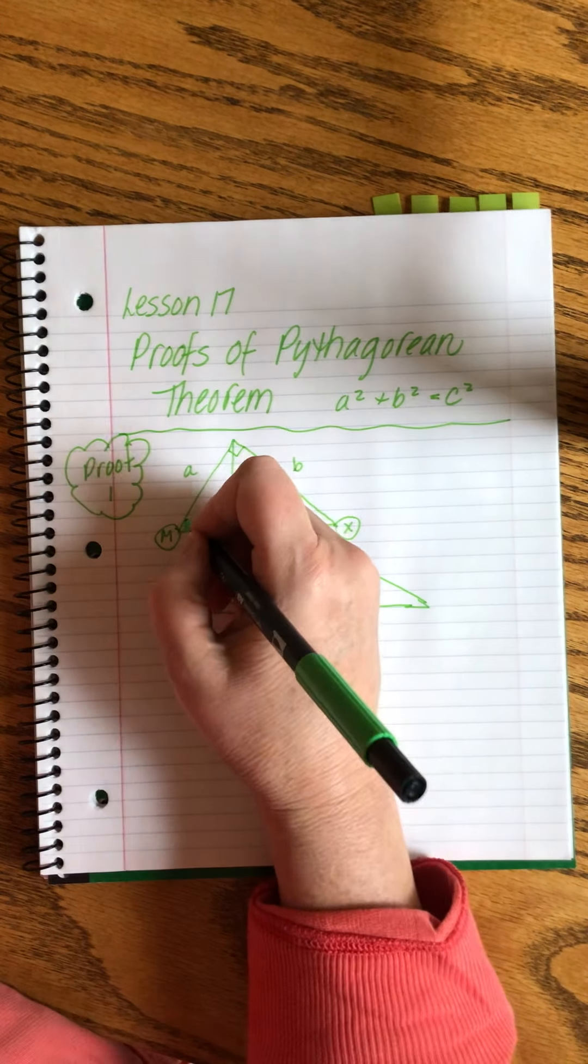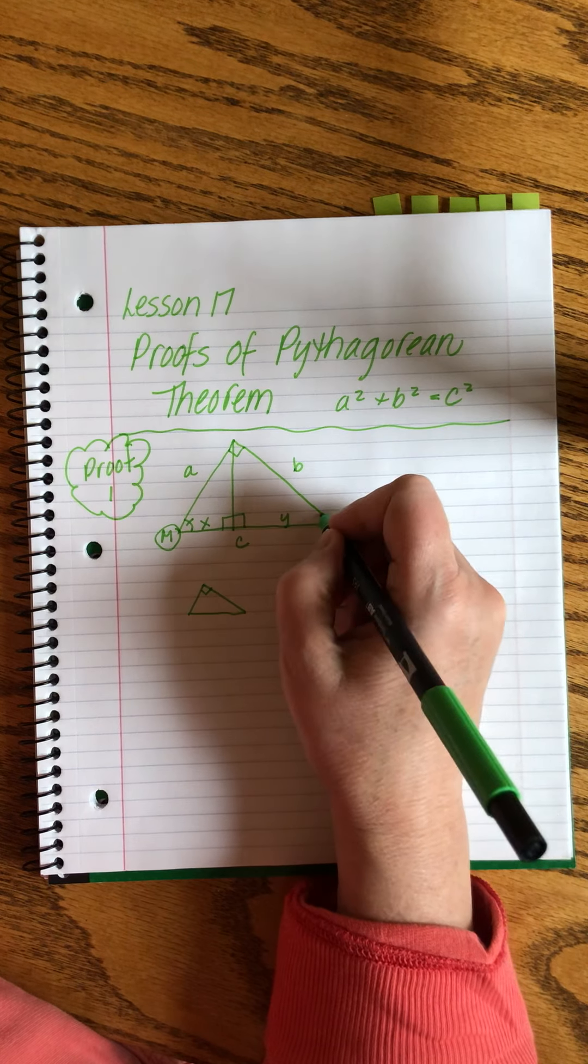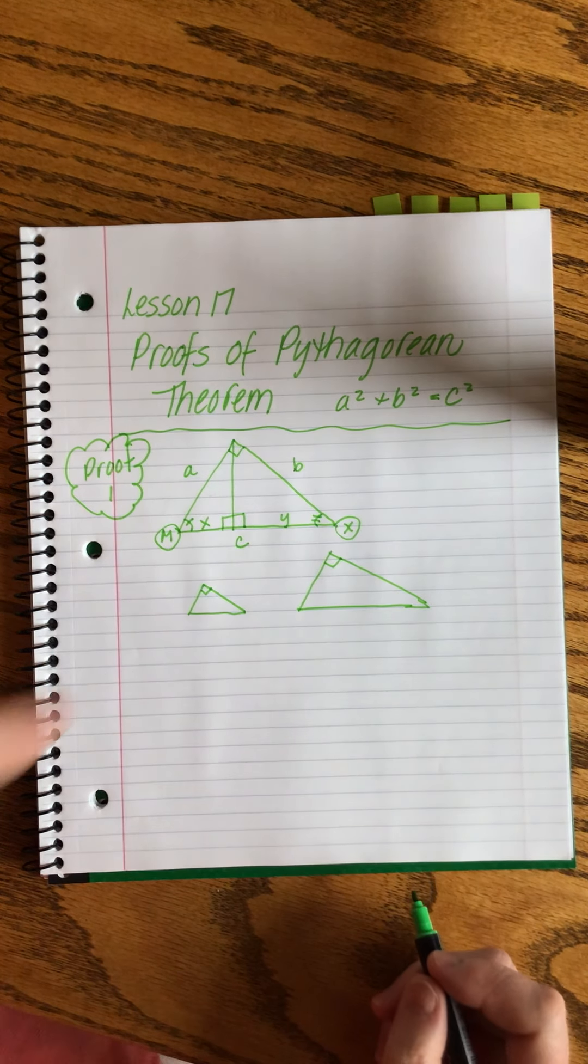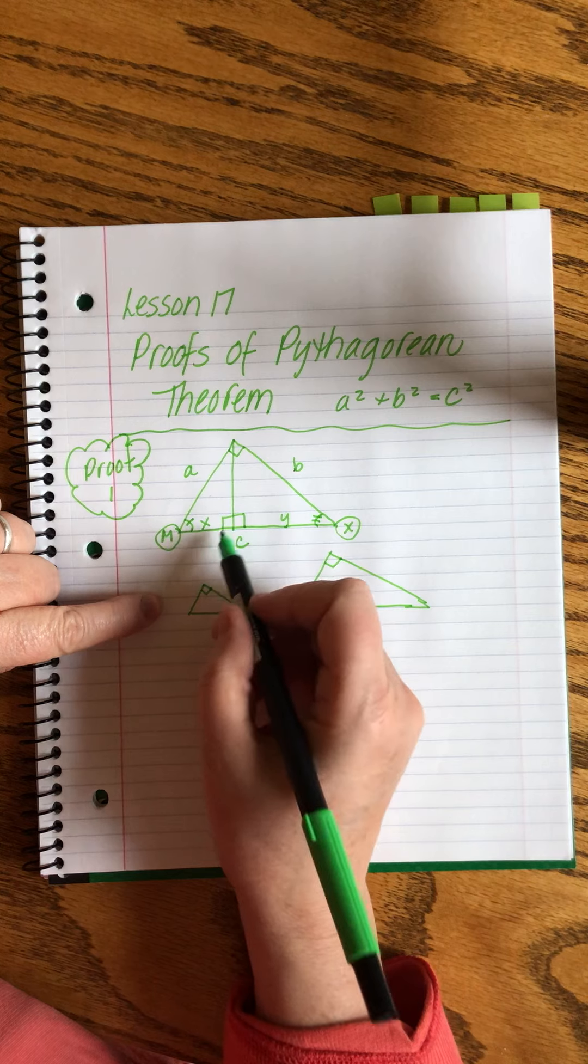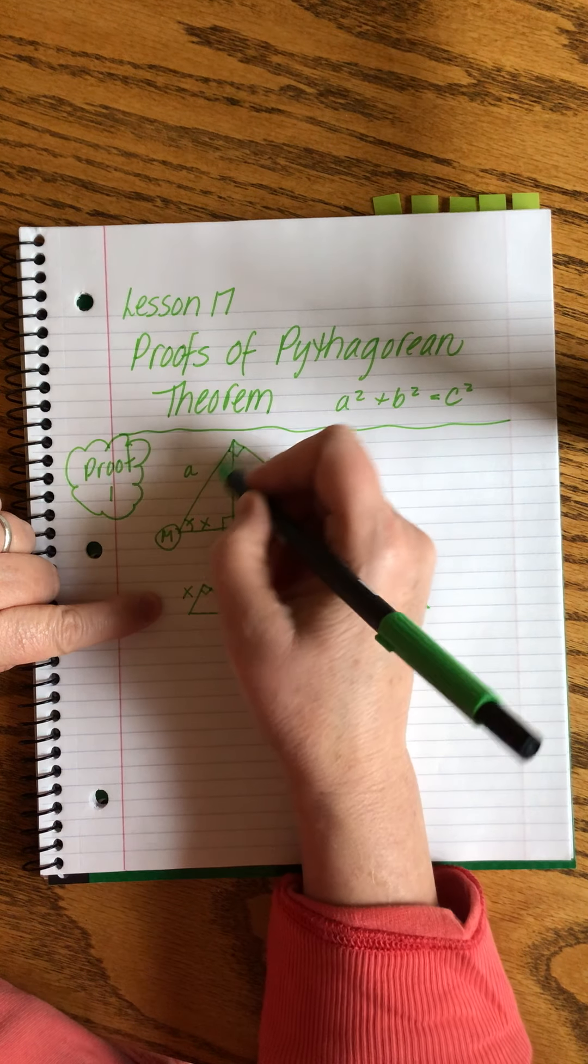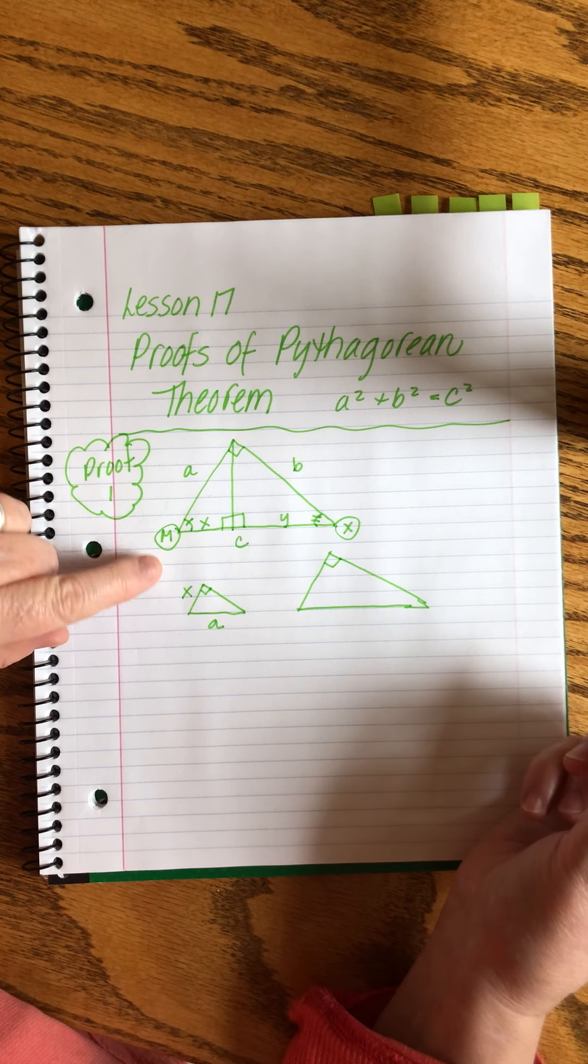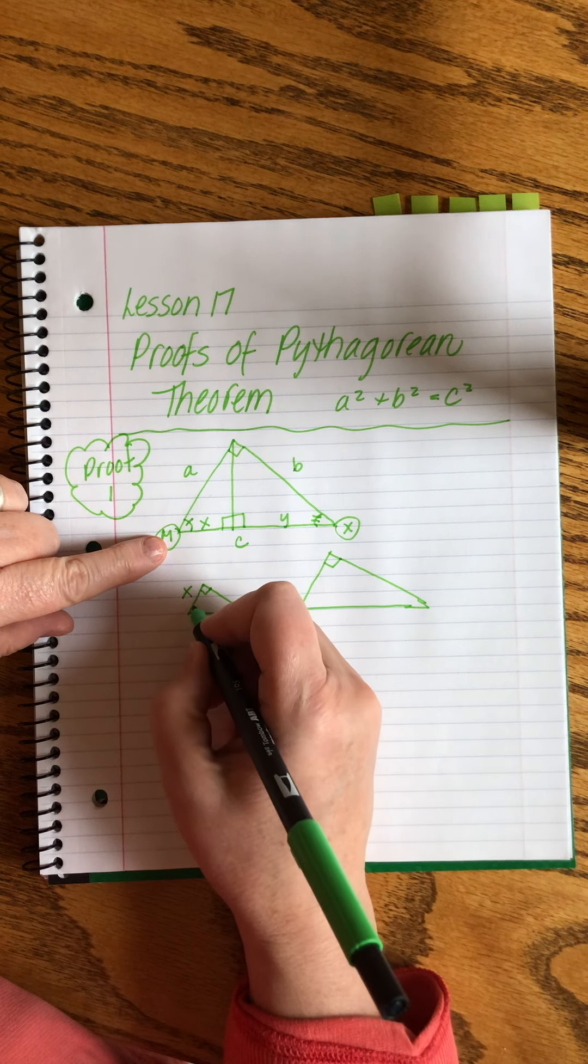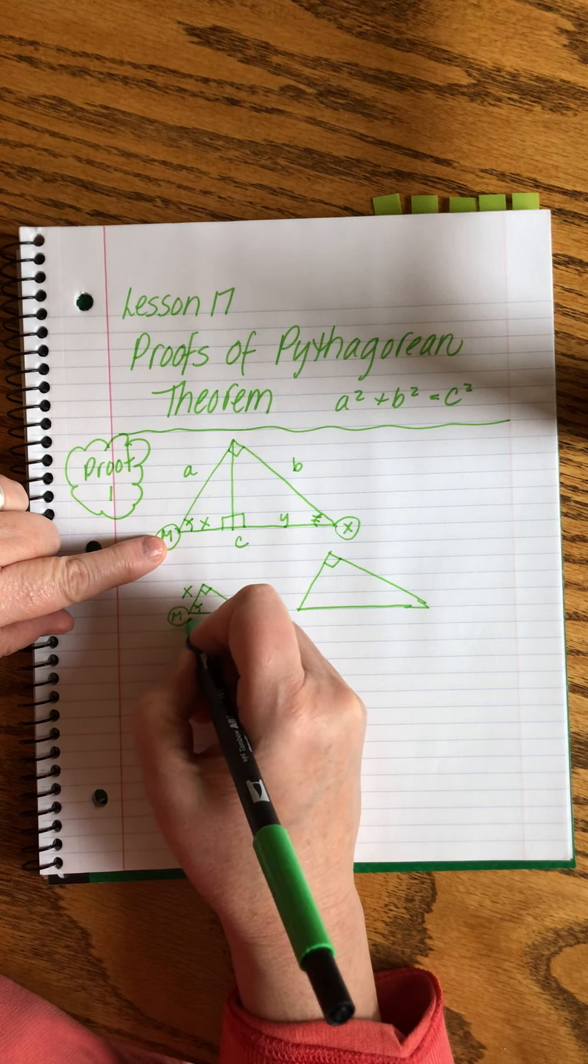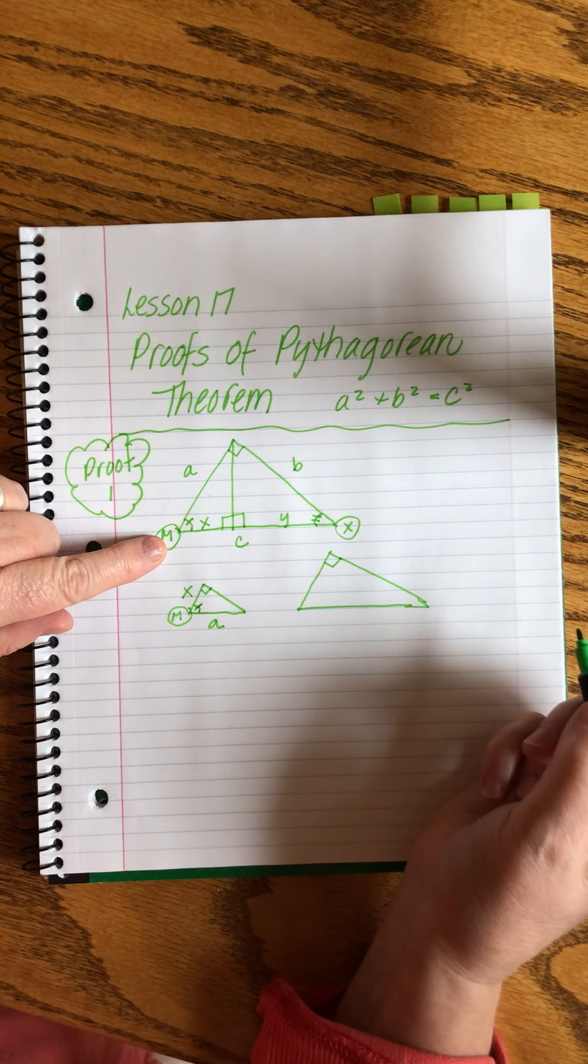So now we just have to be careful. I want to mark this too. Okay, so in this one, let's see. The short leg is called X. The hypotenuse is called A. The angle here is angle M, just to orient ourselves, right? That's the same.